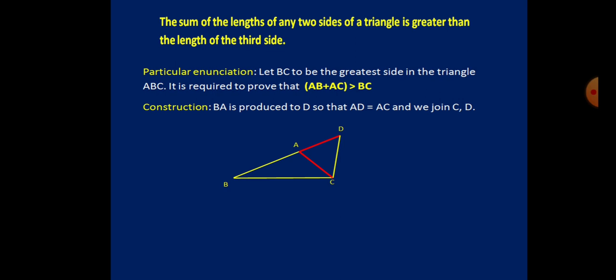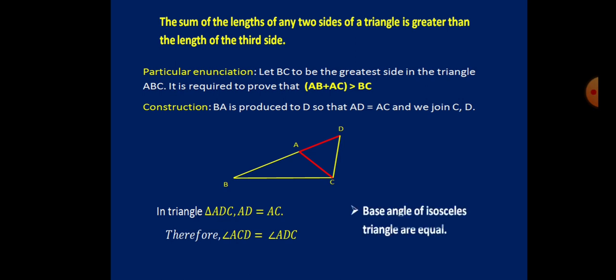For the construction, BA is produced to D such that AD equals AC. This makes triangle ADC an isosceles triangle. In an isosceles triangle, the base angles ACD and ADC are equal. From the picture, it is obvious that ACD and BDC are equal, as ACD is replaced by BDC.